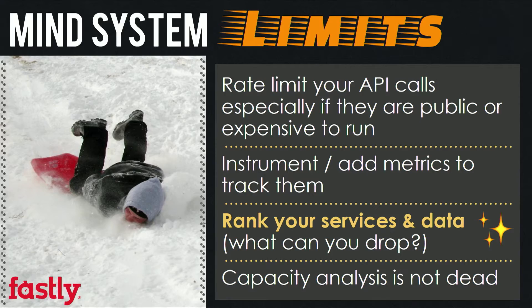You should rate-limit your API calls, especially on calls that are public or expensive to run, because with a public API you don't necessarily understand how users are going to use it. Rate limiting and tracking API calls is also very important. A complementary approach is to prioritize and rank your systems. What data is absolutely critical to the well-functioning of your system, and what are the things that you can drop? For example, something expensive but not critical might be shut off with your kill switch to provide system availability when you're under attack or things aren't going great.